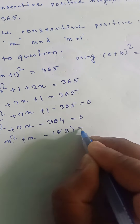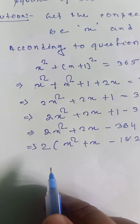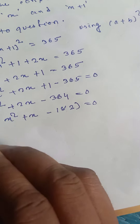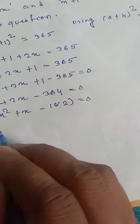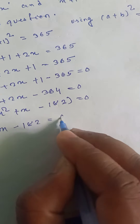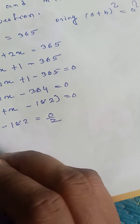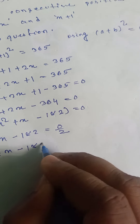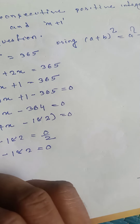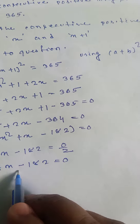Simplifying: 2x square plus 2x minus 364 equals 0. Taking 2 as common: x square plus x minus 182 equals 0. This is a quadratic equation.